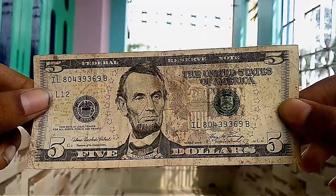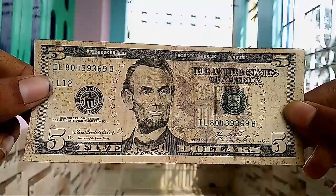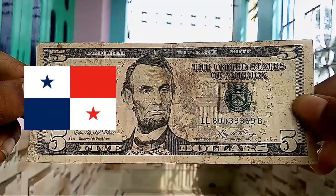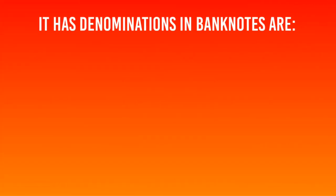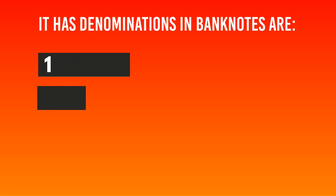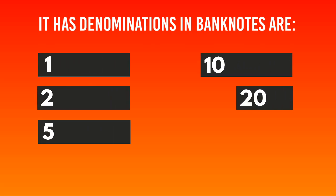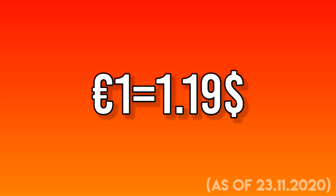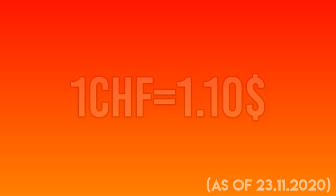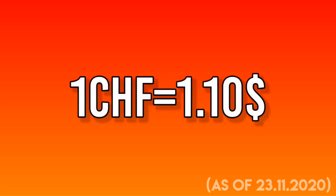The US dollar is the world's primary reserve currency. Some countries like Panama and Zimbabwe even use the US dollar as their currency. The subunit is the cent. Denominations in banknotes are 1, 2, 5, 10, 20, 50, and 100. The exchange rates are: 1 euro equals 1.19 dollars, 1 Swiss franc equals 1.10 dollars, and 1 pound equals 1.34 dollars.